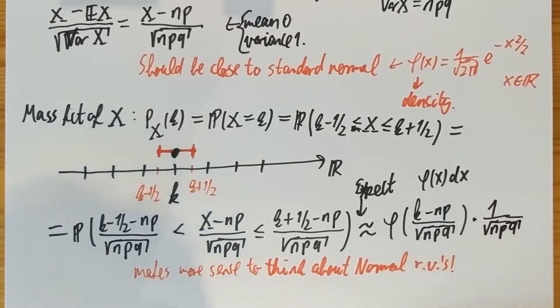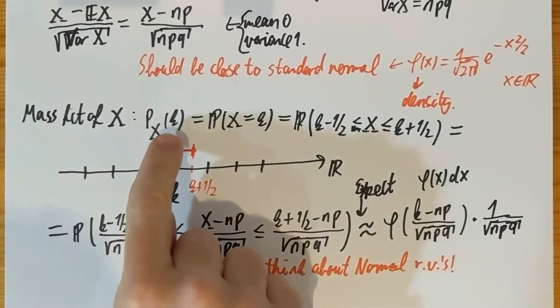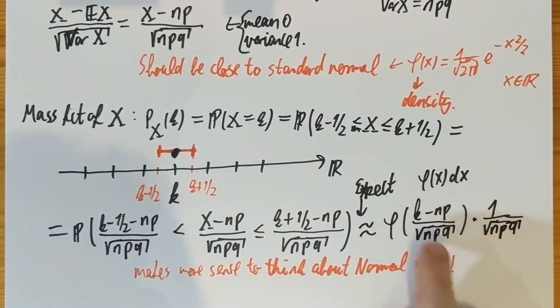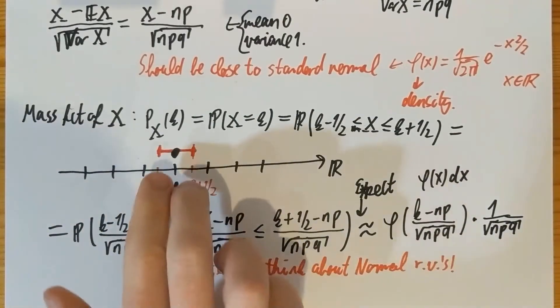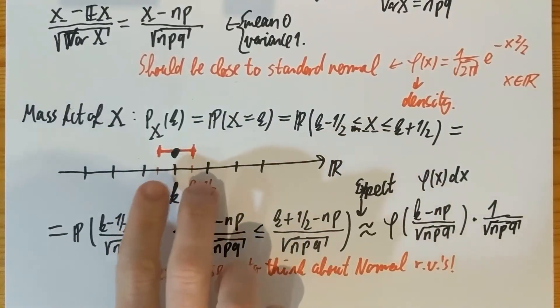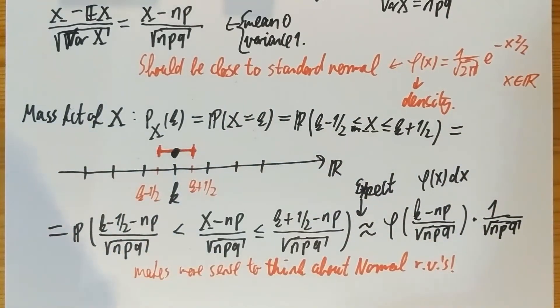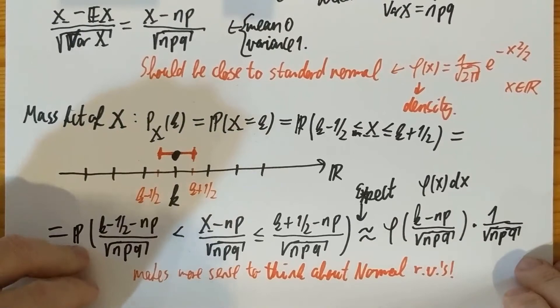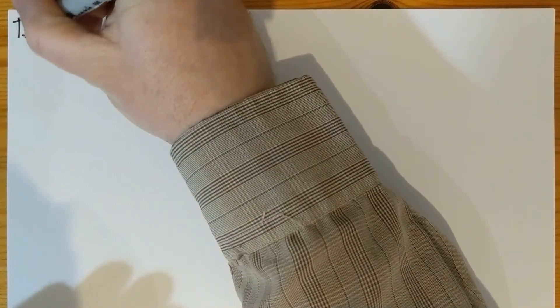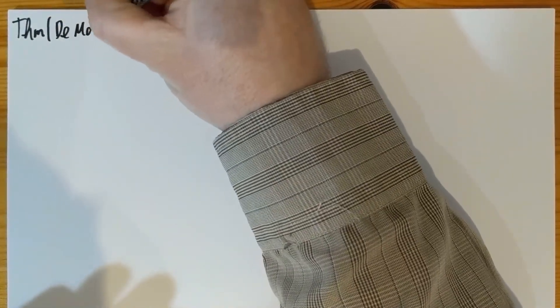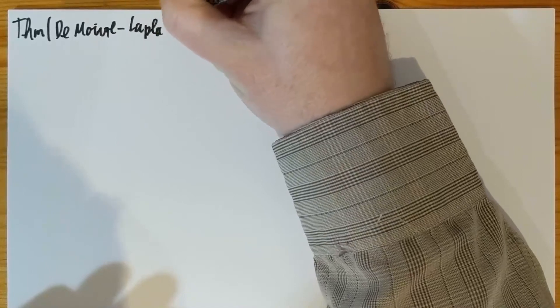In terms of the normal approximation, we expect the mass function p_X(k) to be close to φ((k − np)/√(npq)) × (1/√(npq)). The reason is that the integer k is represented by an interval of length 1 before transformation, which maps to length 1/√(npq) after transformation, and if the standardized variable behaves like a standard normal, this is what we'd expect. That was the motivation, and now I can state the De Moivre-Laplace central limit theorem.